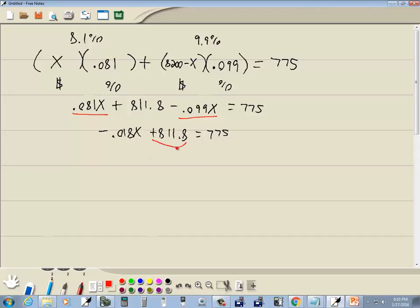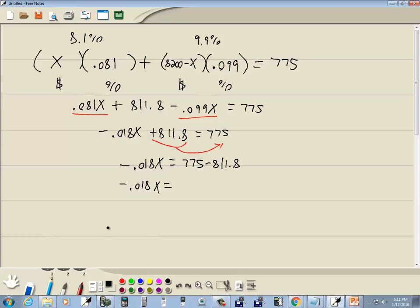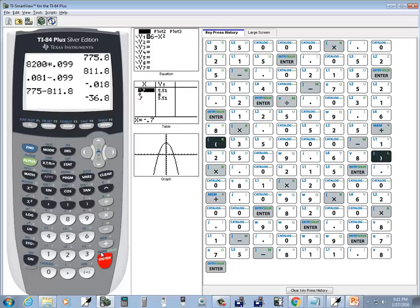So I take this number and move it over to the right side. So we've got negative 0.018X is equal to 775 minus 811.8. So 775 minus 811.8. Negative 36.8.